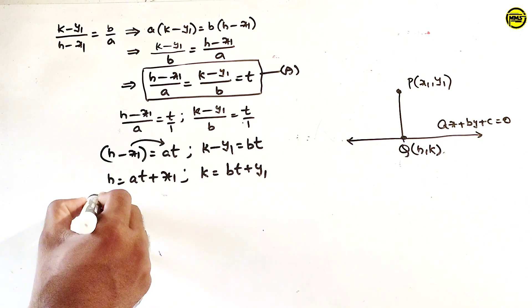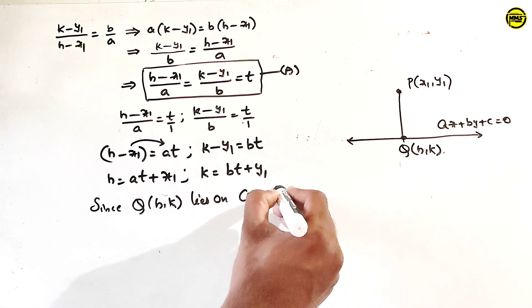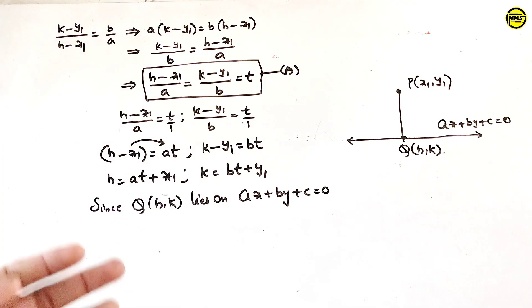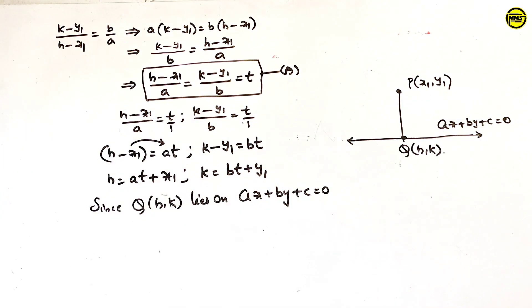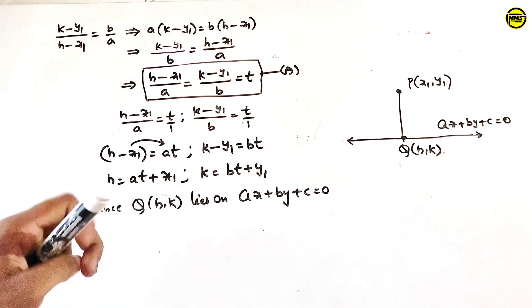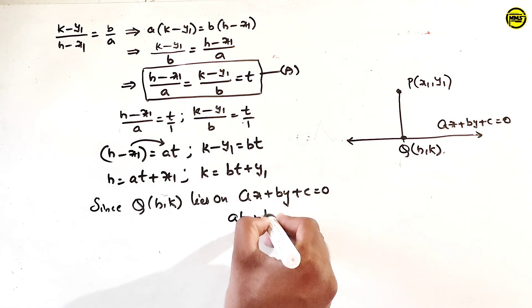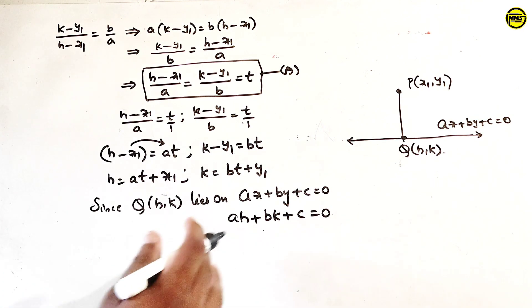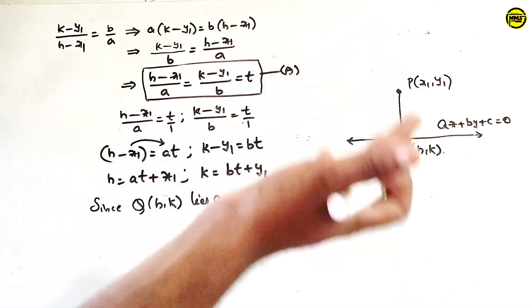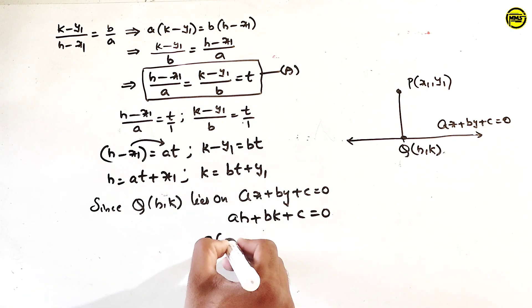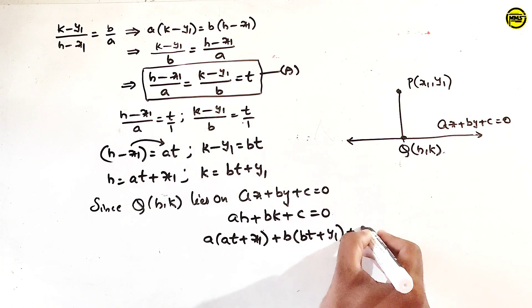Now, since Q of h, k lies on the line ax plus by plus c equal to 0, every point on the line satisfies the equation. So substituting x equals h and y equals k into the equation: a into h plus b into k plus c is equal to 0. Substituting h equals at plus x1 and k equals bt plus y1: a(at plus x1) plus b(bt plus y1) plus c equals 0.